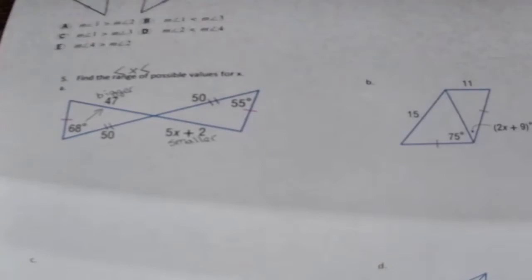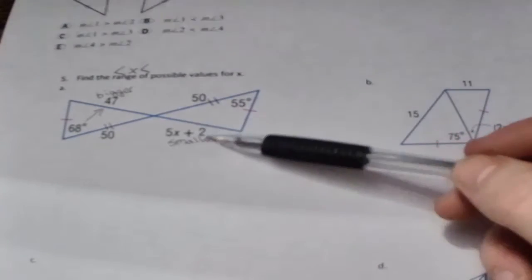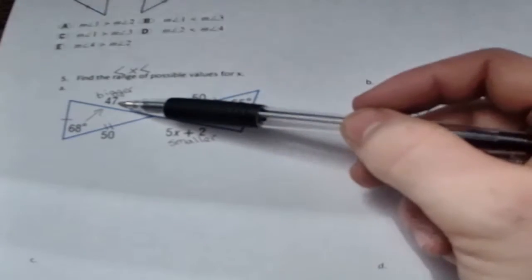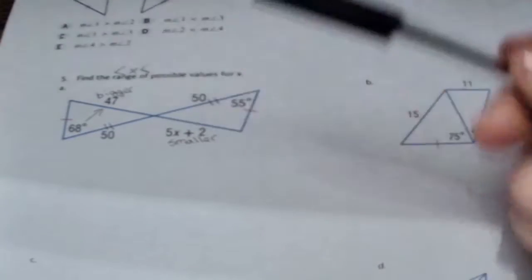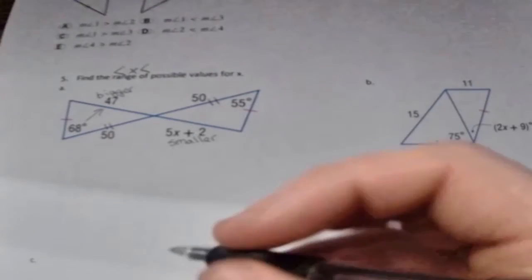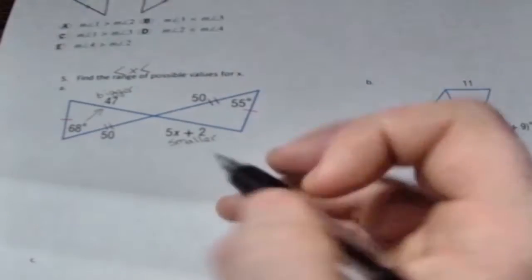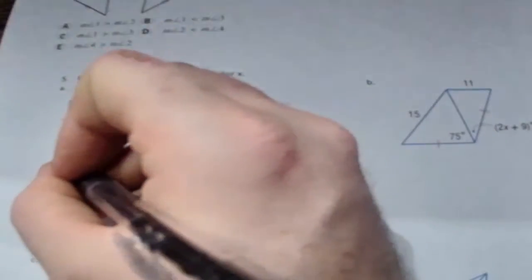So what that tells me is that this side over here cannot be a number bigger than 47, so my max value would be 47. Now for a lowest value, no side in a triangle can be zero or a negative number. So when I go to set this up, I'm going to be using this equation: 5x plus 2.